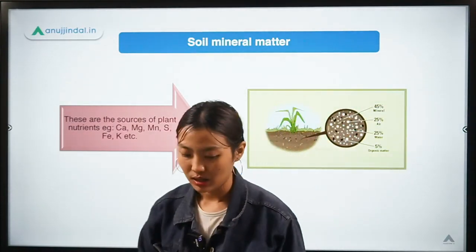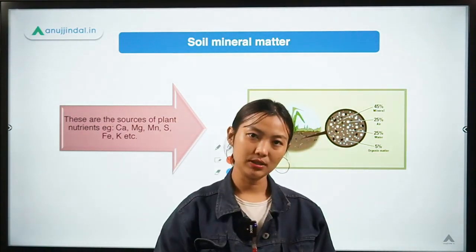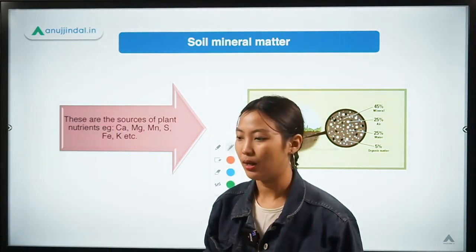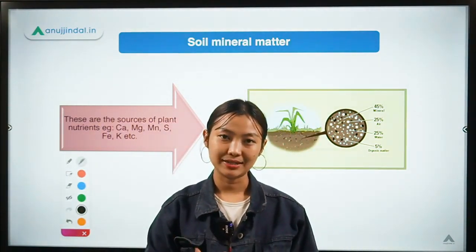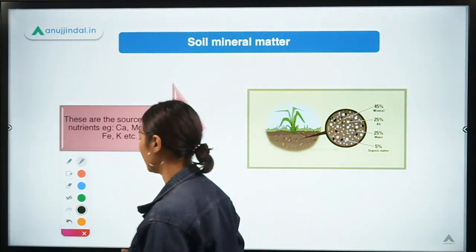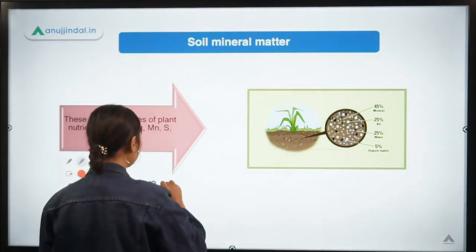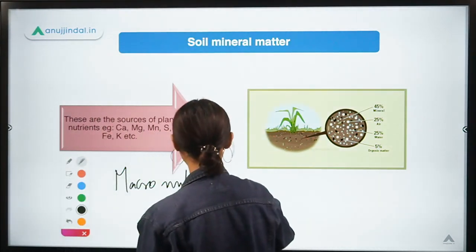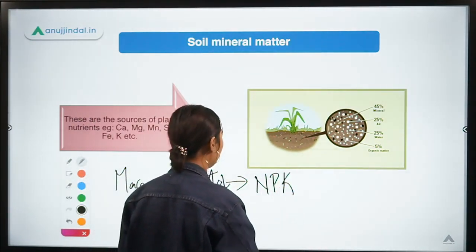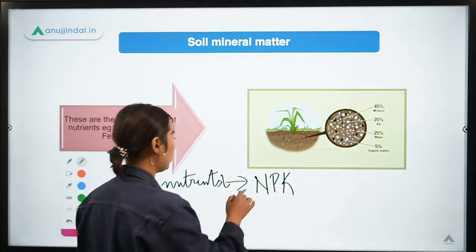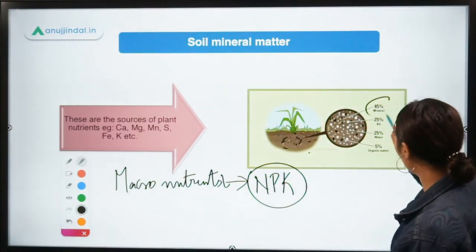Now we come to soil mineral matter. Soil mineral matter is the minerals or nutrients which are present in the soil. The basic nutrients necessary for normal growth and development of crops are NPK — these are known as macronutrients. These are the major nutrients present in the soil.